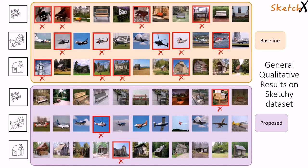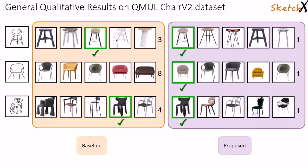Here are some general qualitative category-based retrieval results on the Sketchy dataset with our proposed method versus a baseline. These are some fine-grained retrieval results on QMUL ChairV2 dataset. Numbers denote the rank of the matching photo.